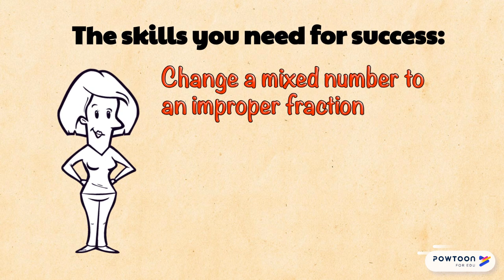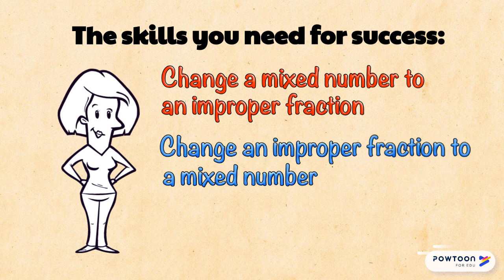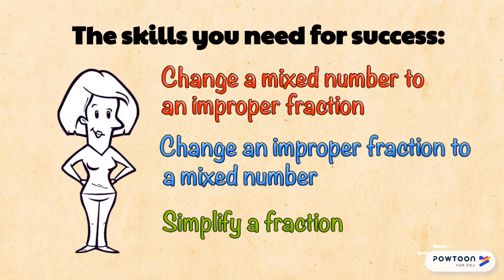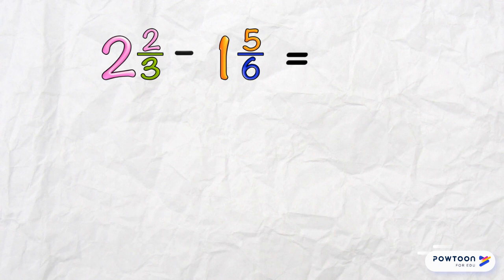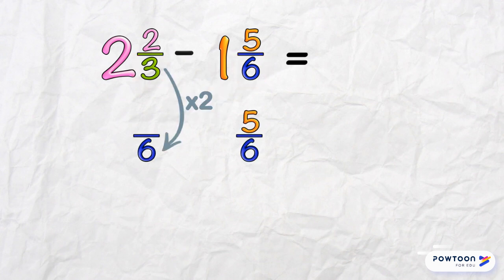And they are... to simplify a fraction. Let's do one! Remember, first we need a common denominator. Our common denominator will be 6. To turn 3 into 6, we multiply by 2. So up top, we get 4.